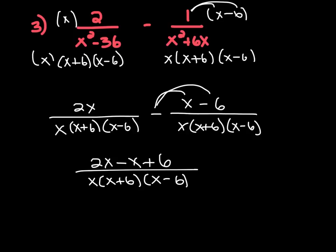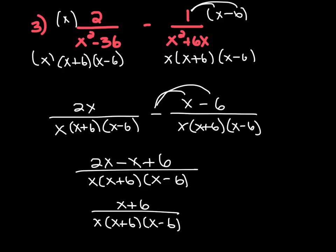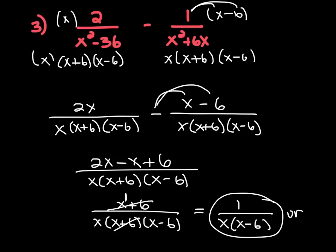So I'm going to bring down my 2x, and then I have minus x and then plus 6. Let me bring down the common denominator. Now combining like terms on top, 2x minus x is just x, so we have x plus 6 over x times x plus 6 times x minus 6. This x plus 6 in the numerator is going to cancel off with the x plus 6 in the denominator, and keep in mind x plus 6 divided by x plus 6 is 1, so it leaves us with 1 over x times x minus 6. You can leave it like this, or distribute the x to rewrite the denominator as x squared minus 6x.